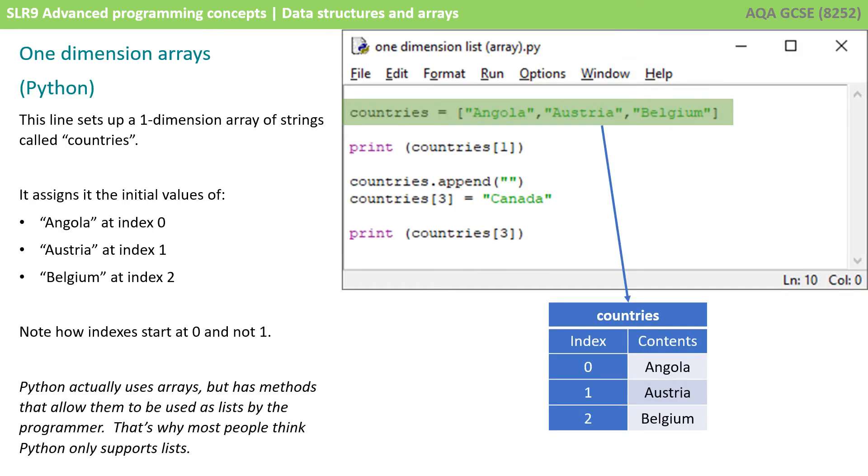So, we're going to use some code example here from Python. Now, just a quick note, Python does actually use arrays, but it has methods that allow them to be used like lists by a programmer. And that's why most people think Python only supports lists. But this little extra level of complication is beyond the spec. For all intents and purposes, at GCSE, you can effectively think of lists and arrays as the same things, although that's not strictly true.